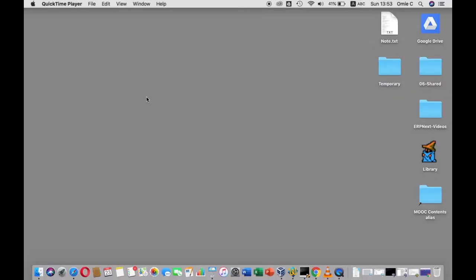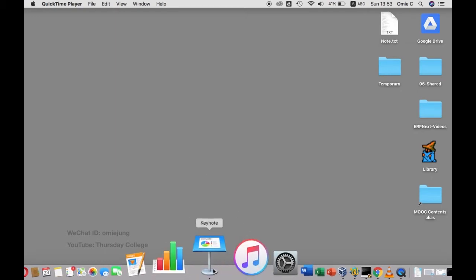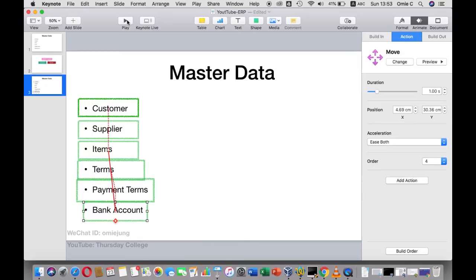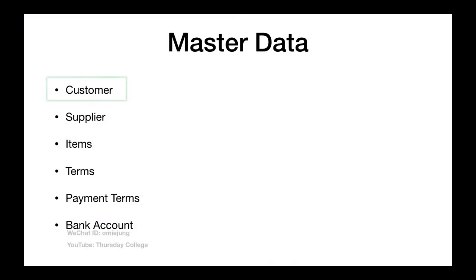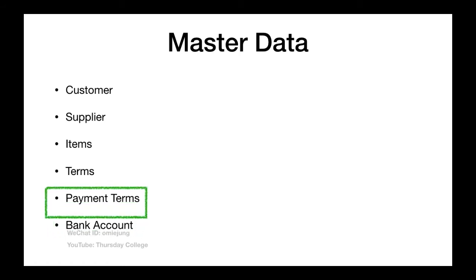Let's continue the topic on ERP Next. So the last two topics, number 6 and number 7 of the series, we put in the information for the master data already — that is the customer, supplier, item, and then we went to bank account. So today we're going to do the two things that we haven't done: that is the terms and conditions and payment term.